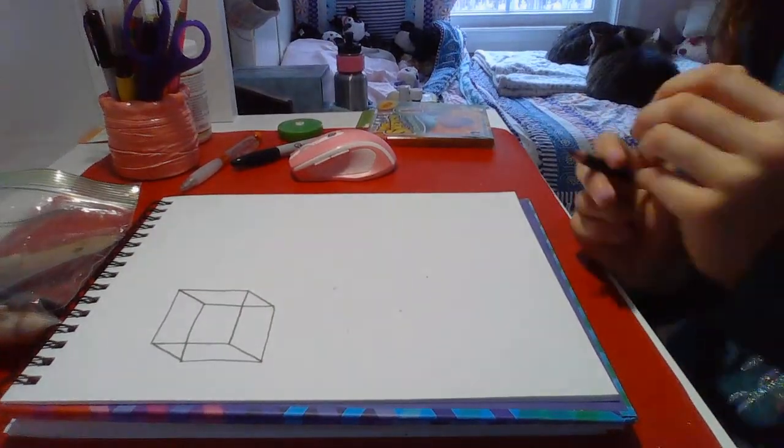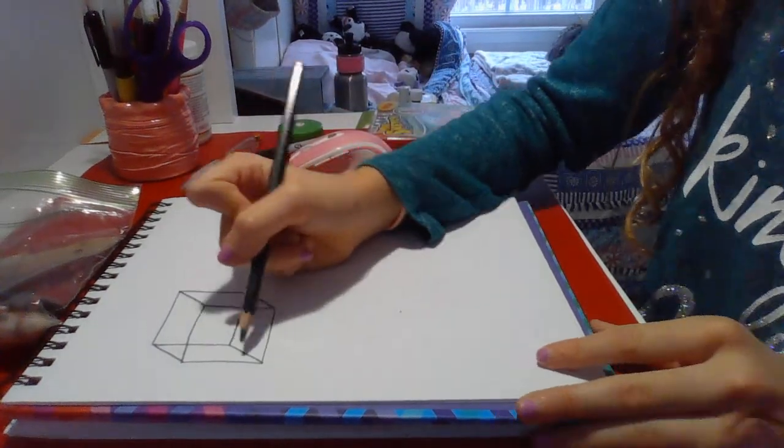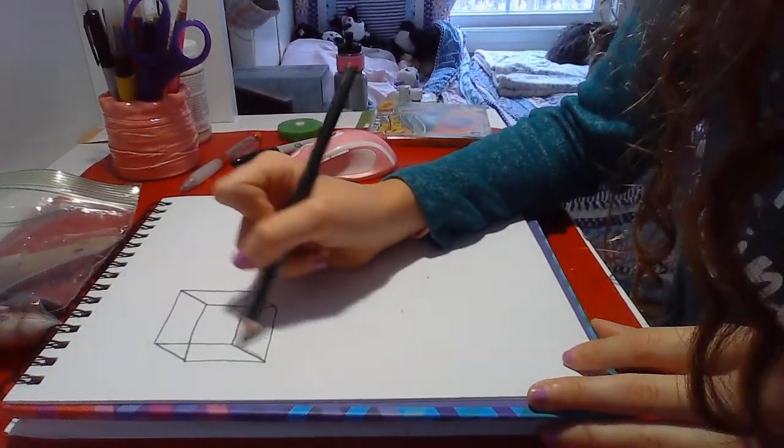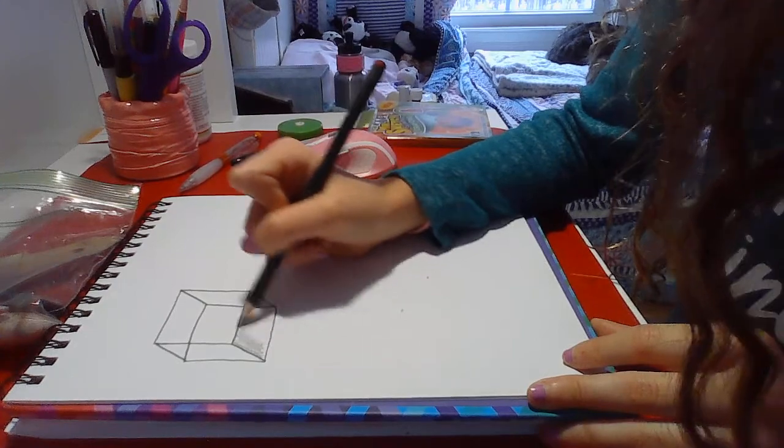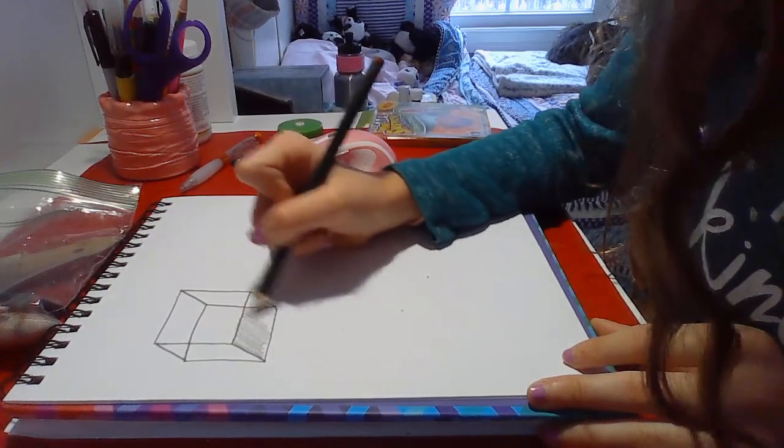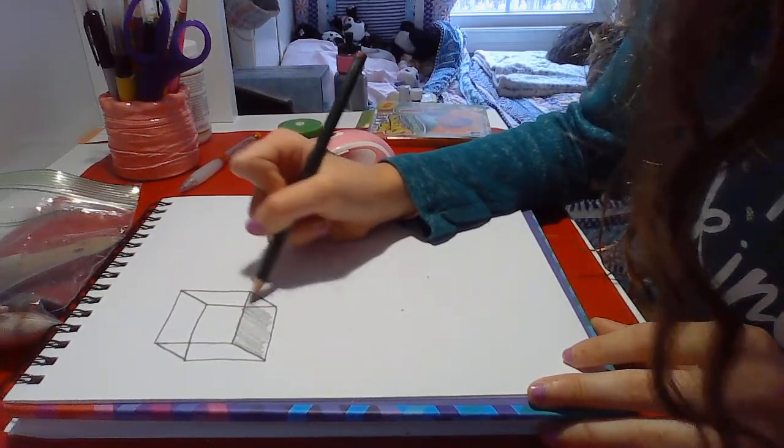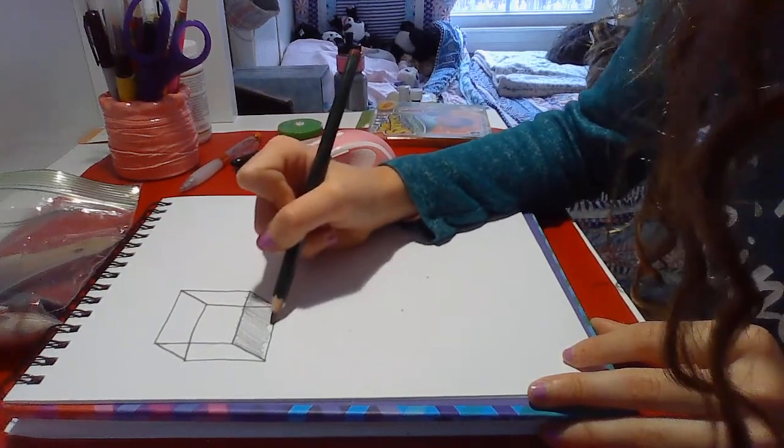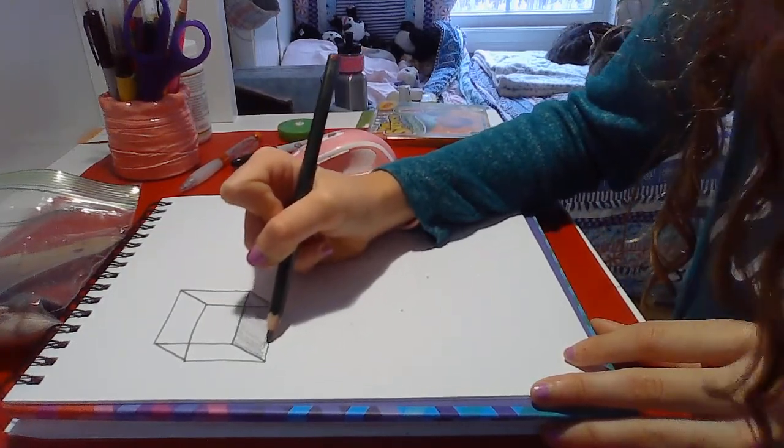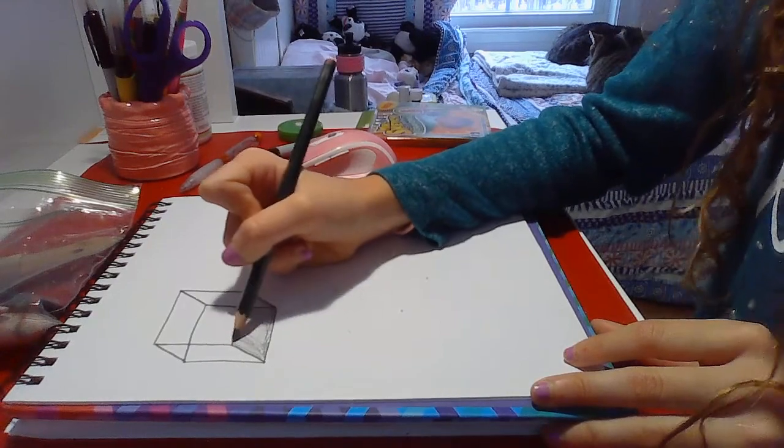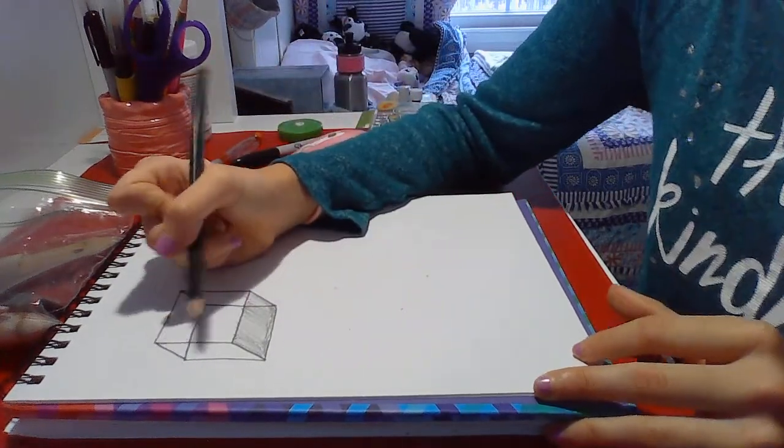There you have your cube. And if you want to you can do a little bit of shading on your cube to give it, I don't know how I'm going to put this, maybe a more three-dimensional look? I mean it already looks three-dimensional but this could make it look like it's a box.